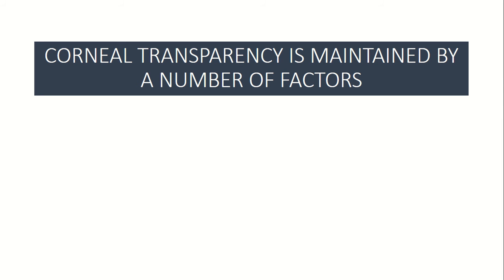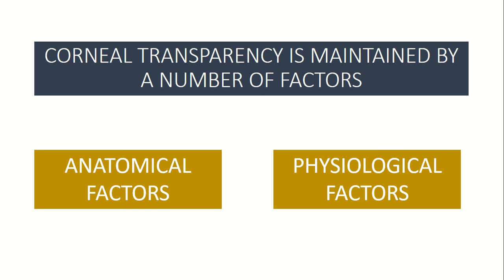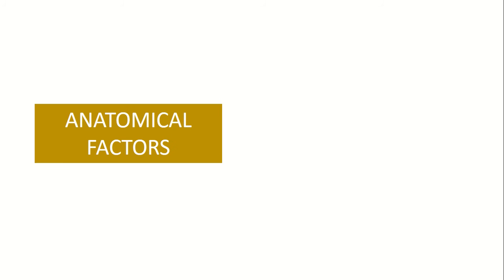Corneal transparency is maintained by a number of factors. These factors can be divided into first, anatomical factors, and secondly, physiological factors. There are five anatomical factors.